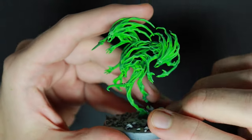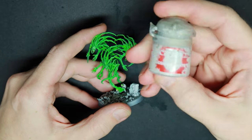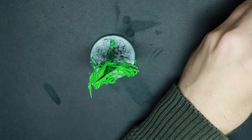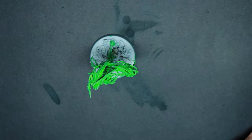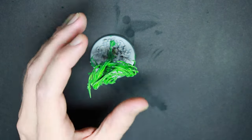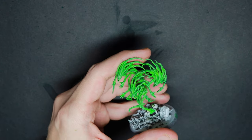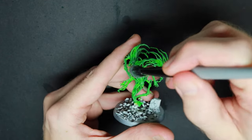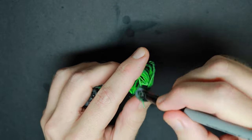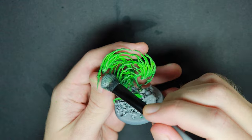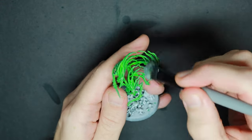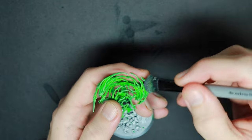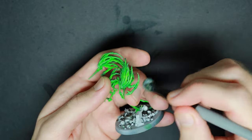For the next step, again, we will just be using the Corax White. And this time we will only be dry brushing the highest recesses of the miniature. Because we don't want to cover all the Gaur we just put on. So we will just be hitting things like the face. This is very fast. The blade. Those tentacles. And their hands.